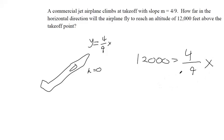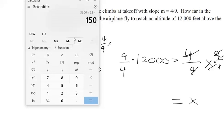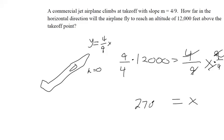So, multiply both sides by nine-fourths. The reciprocal. Make those canceled. There we go. So, I've got to multiply this by nine-fourths. And I'm just going to do that in my calculator. So, nine times twelve-thousand divided by four. It looks like twenty-seven thousand feet in the horizontal direction.